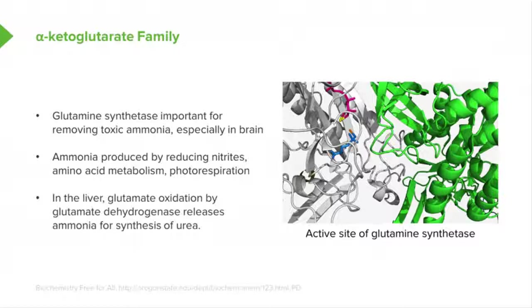In the liver, glutamine oxidation by glutamate dehydrogenase releases ammonia for synthesis of urea. Urea is the excretion product by which we eliminate excess amines from our body.